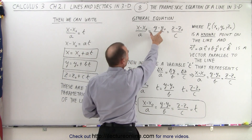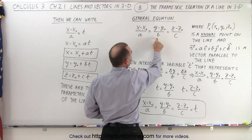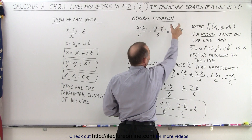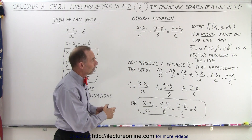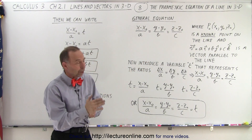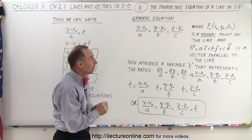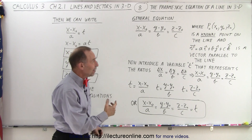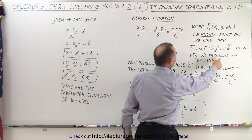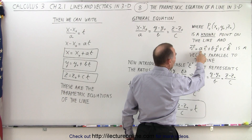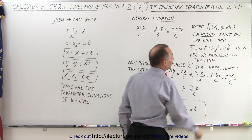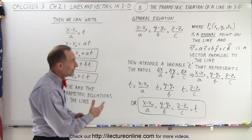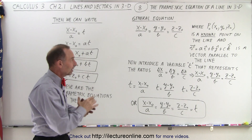That should equal the ratio of the difference in the y values divided by the b component of that vector, and the difference in the z values divided by the c component of the vector. In other words, the point (x₀, y₀, z₀) is a known point on the line, (x, y, z) is any point on the line, and v is the parallel vector to the line with components a, b, and c for the i, j, and k components.